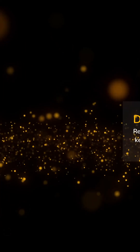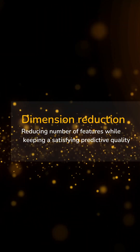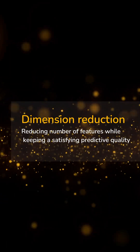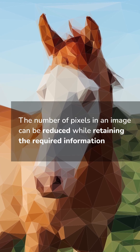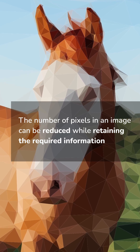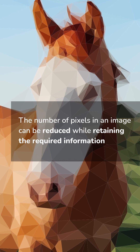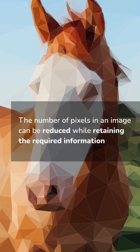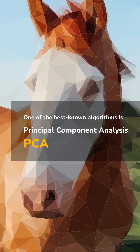There's also dimension reduction, which consists in reducing the number of features while keeping a satisfying predictive quality. This is the case, for example, with images containing thousands of pixels, where each pixel is seen as a feature. The objective is to reduce the number of pixels without losing too much essential information. One of the best known algorithms is Principal Component Analysis, or PCA.